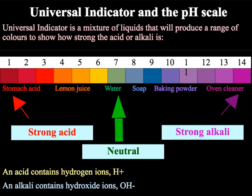It is the combination of H⁺ and OH⁻ ions which makes water neutral. Water, which is H₂O, is made up of one H⁺ ion and one OH⁻ ion. This gives it a ratio of 1 to 1, making it neutral.